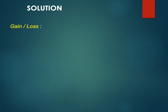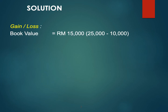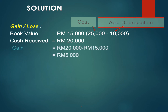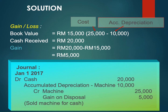To calculate the gain or loss: book value is 15,000 (cost of 25,000 minus accumulated depreciation of 10,000). Cash received is 20,000. Since cash received of 20,000 is more than the book value of 15,000, the company gains on disposal: 5,000. The journal entry on January 1, 2017: debit Cash 20,000, debit Accumulated Depreciation – Machine 10,000, credit Machine 25,000, and credit Gain on Disposal 5,000. Reason: sold machine for cash.